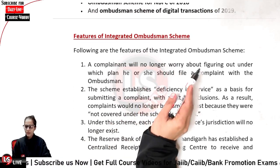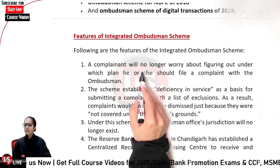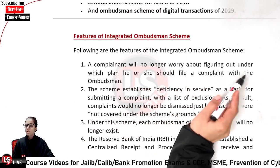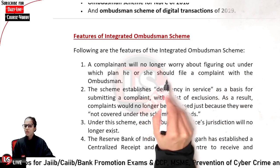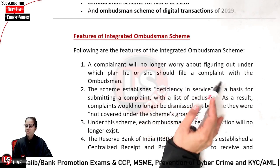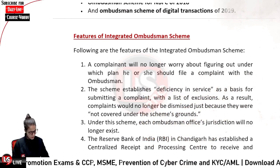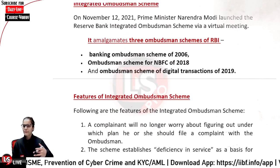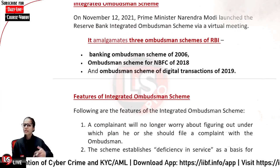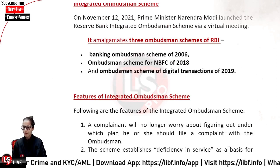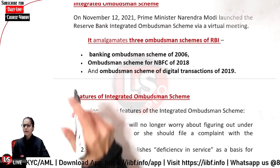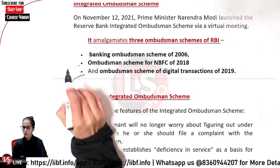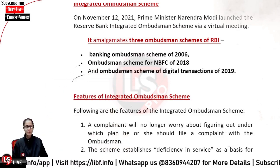Following are the features of the Integrated Ombudsman Scheme. A complainant will no longer need to worry about figuring out under which scheme they should file a complaint with the Ombudsman. Whether you are a bank customer, an NBFC customer, or have a digital transaction issue — if you have any issue, there will be a common application form for everyone.